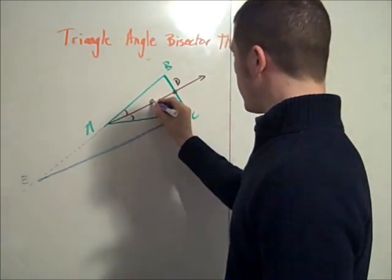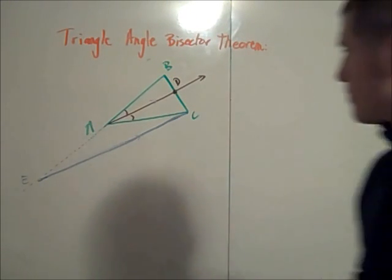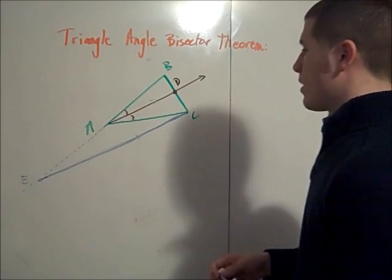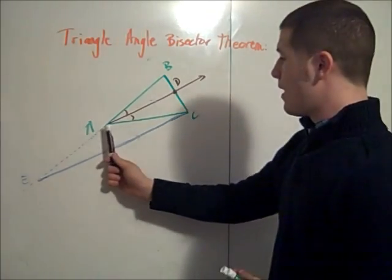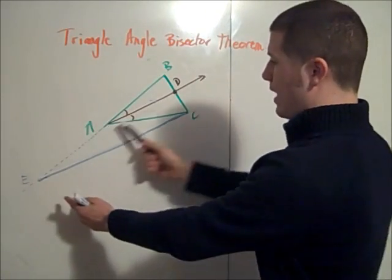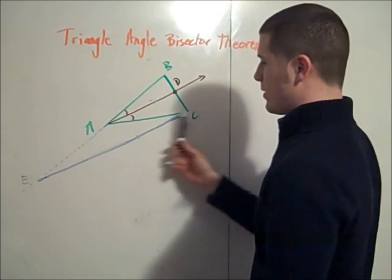That's point E. Now this is parallel to AD. So let's look at these two parallel lines here, cut by the transversal AC.